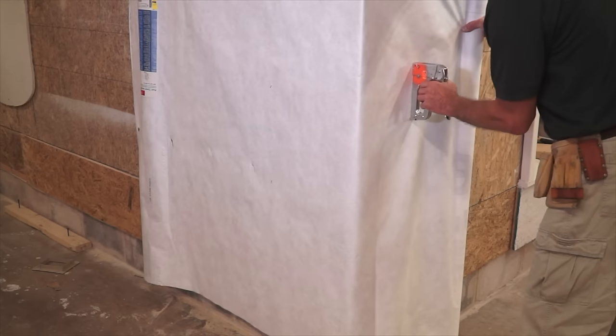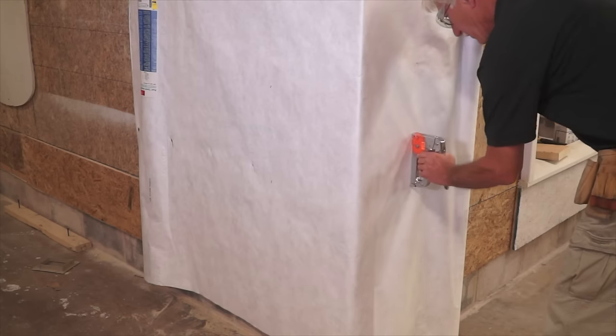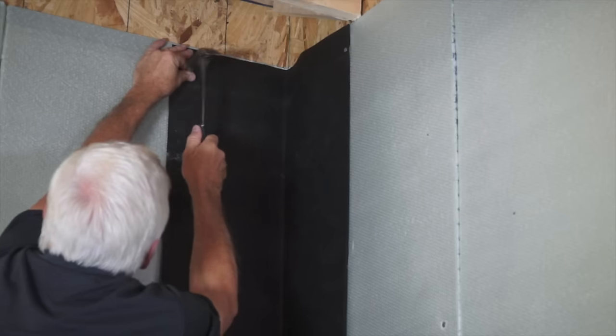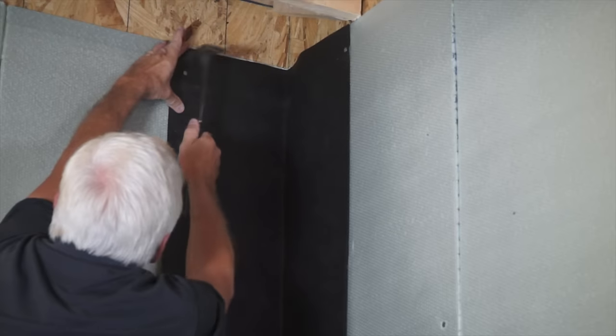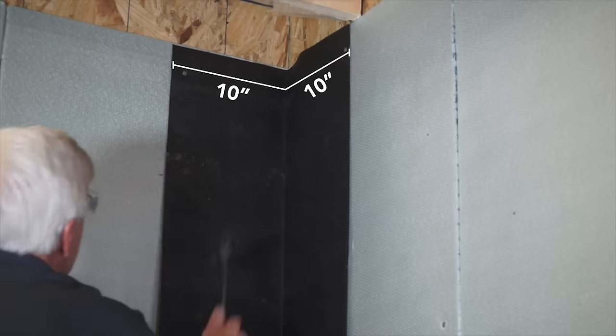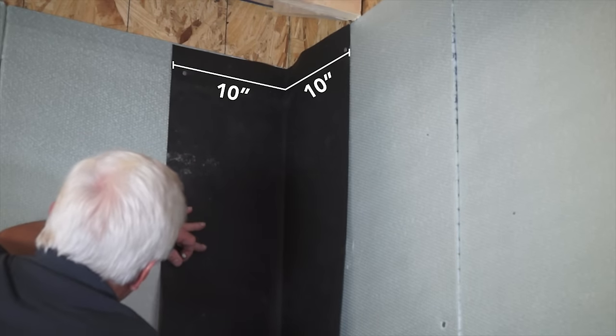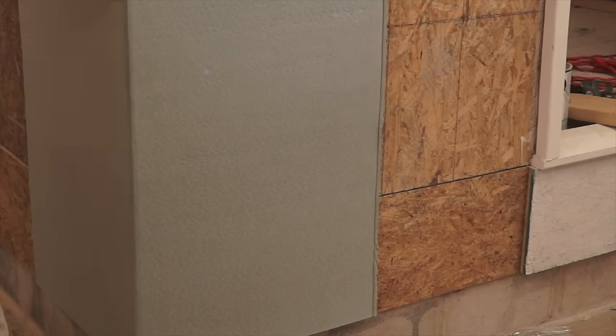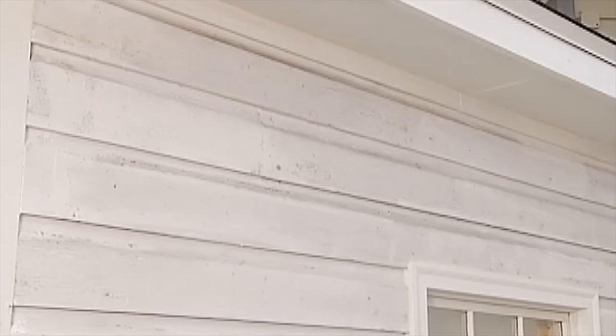Walls should be covered with a water-resistive barrier, such as house wrap, roofing felt, or other products if allowed by the building code. Use a water-resistive material to flash the inside and outside corners for a minimum of 10 inches on each side. Water-resistive materials include trim coil, roofing felt, or house wrap.